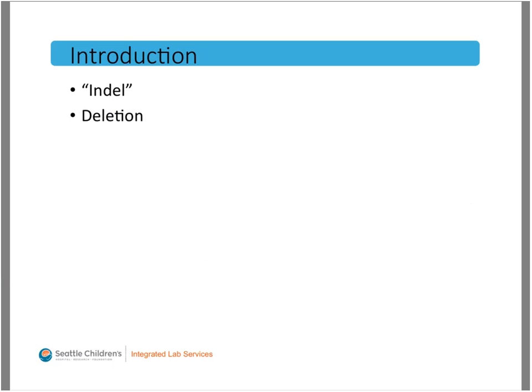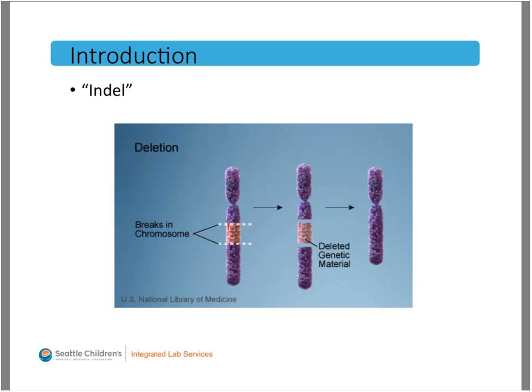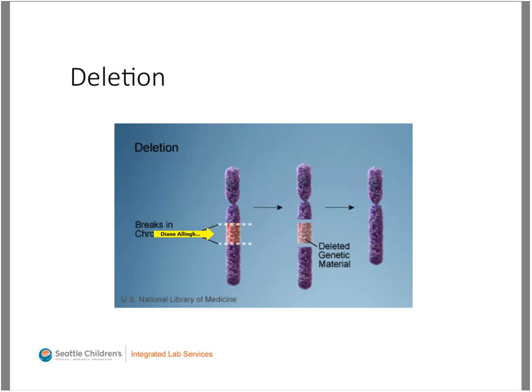A deletion removes a part of the DNA. It can refer to a few bases, as with an indel, or it can refer to multiple exons, a whole gene, or multiple genes. It may alter the protein if it occurs within a gene. If the whole gene is deleted or prevented from making protein, this can lead to haploinsufficiency — loss of half the protein product. Whether this causes disease depends on how the disease is inherited and the types of variants typically associated with it. Most deletions are not cytogenetically visible and require another method of detection.